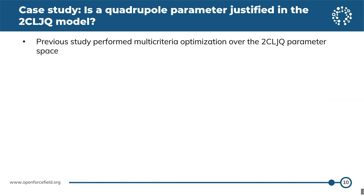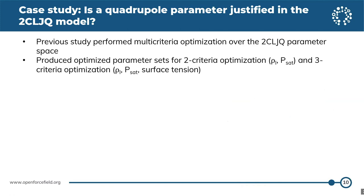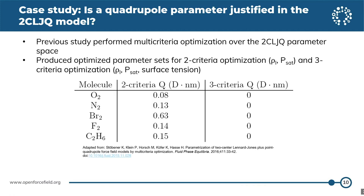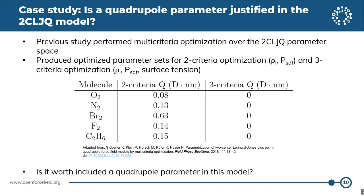Previously, someone used these surrogate models to perform multi-criteria optimization over the parameter space, producing parameter sets for a two-criteria case — liquid density and saturation pressure — and a three-criteria case that also included surface tension. What we noticed from their data was that when you go from the two-criteria case to the three-criteria case, the quadrupole is being driven to zero. This begs the question: is it worth it to include the quadrupole parameter in this model? We can answer this using Bayesian inference.